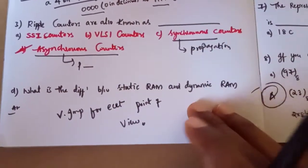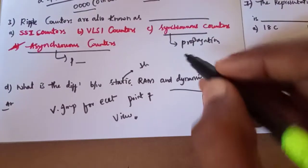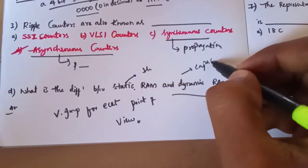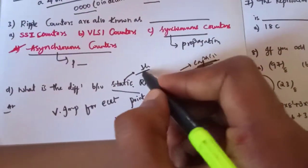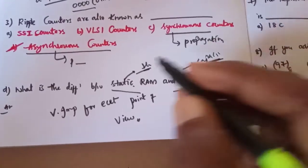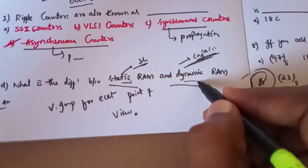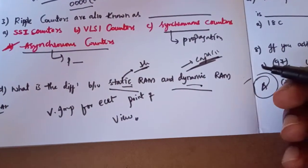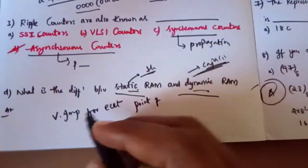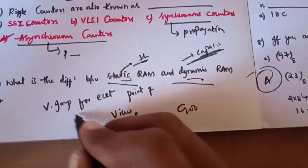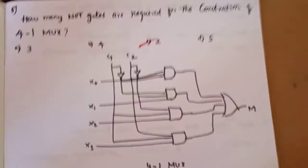What is the difference between static RAM and dynamic RAM? Static RAM is made up of flip-flops. Dynamic RAM is made up of capacitors and requires a refresh rate. Static RAM is faster, while dynamic RAM has a larger size. This is an important distinction that appears regularly in exams.